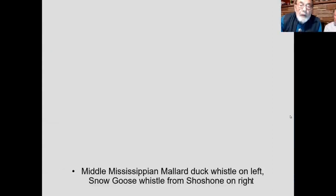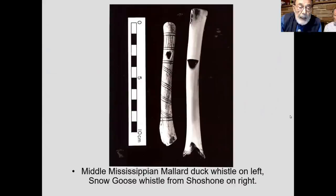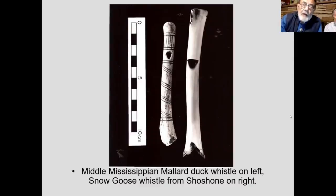Another use of bird bones was to make whistles. The one on the left is a mallard duck bone from a Middle Mississippian period site in Missouri. The one on the right is a snow goose sun dance whistle collected from the Shoshone by archaeologist Bill Malloy in the 1930s, held at the University of Wyoming. When blown, someone with an ear for music identified it as C-sharp — a very shrill sound. Imagine enduring a sun dance ceremony, pectoral muscles pierced, blowing that whistle throughout.